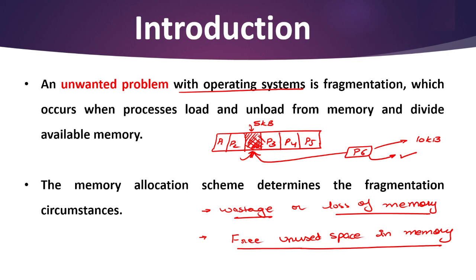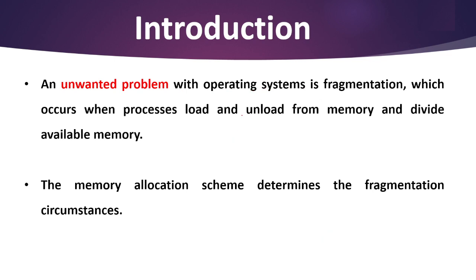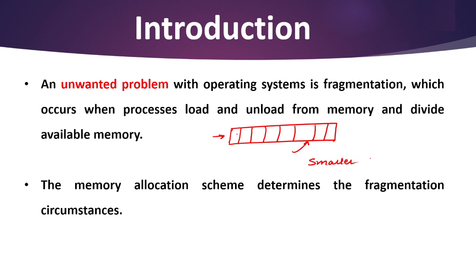I hope everything is clear with the help of this example. In your computer, whenever we store anything or want to save any process, it is directly moved to the main memory. Main memory always stores data in the form of some blocks. Whenever the size of a block is so small that no new process can be added, or it is not possible to swap any old process into that particular space, then that block becomes unused and it is called fragmentation in the operating system.